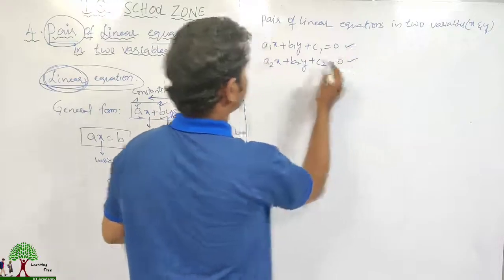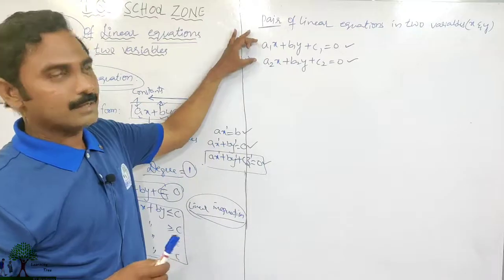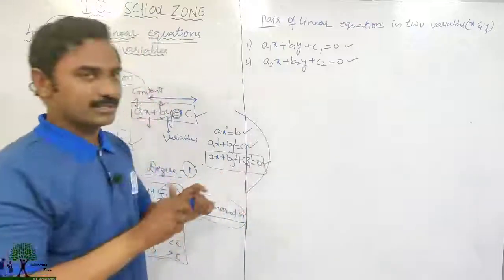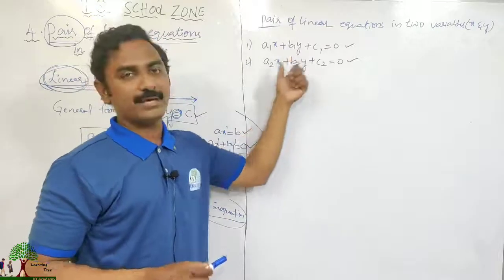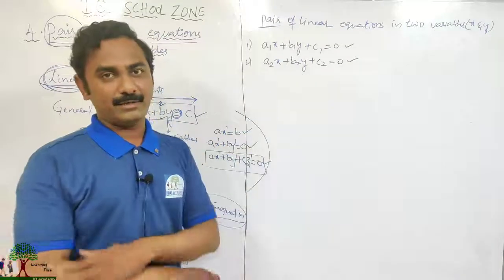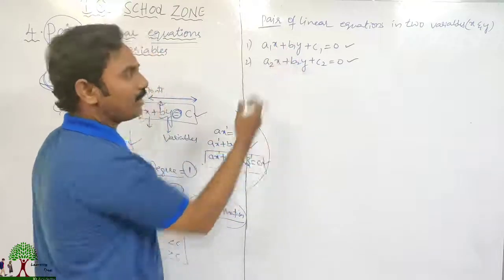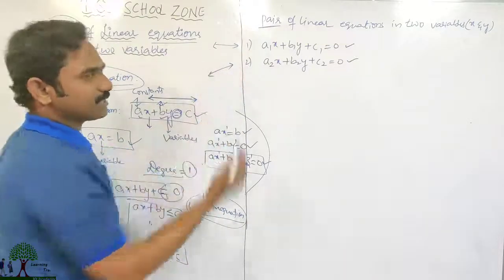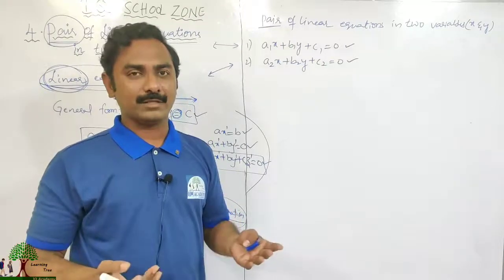These two are called a pair of linear equations. We will study what happens to these two equations and how to solve them to find the values of X and Y. There are different methods for finding these variable values, which we will study in this chapter. First, we will learn about the nature of these two lines — whether they are intersecting, coincident, or parallel.